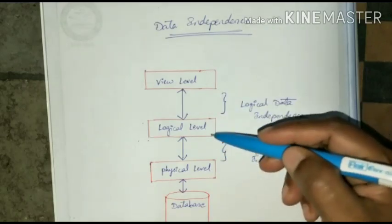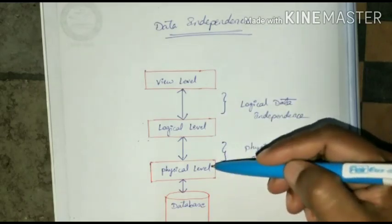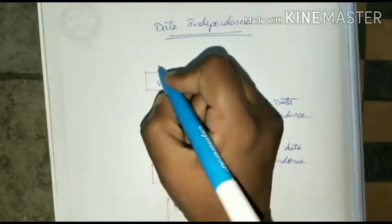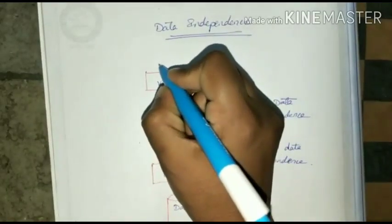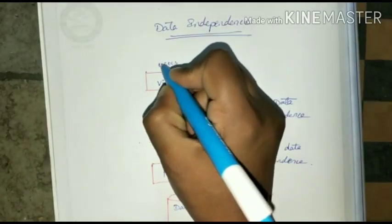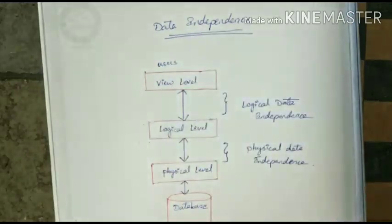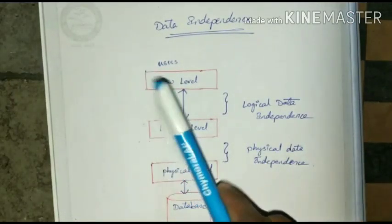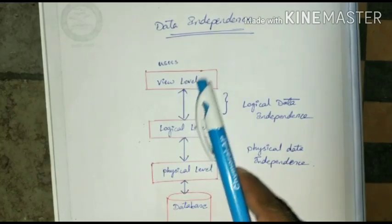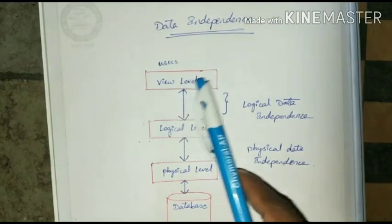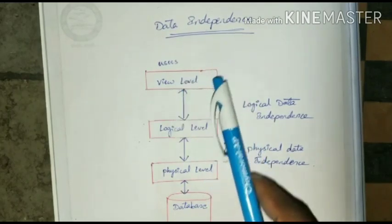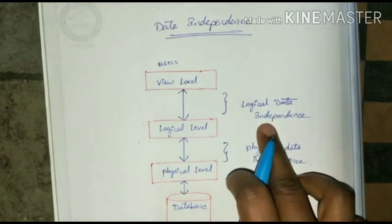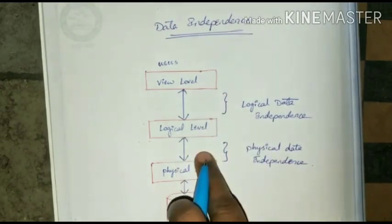We need data independence because at the view level there are users — a number of users like student, faculty, and principal, as I have told you in another video. A number of views are available at the view level, so different users have different views. Logical data independence works between the view level as well as the logical level.